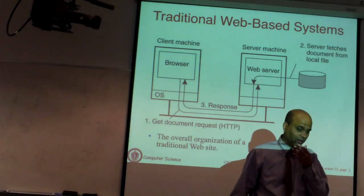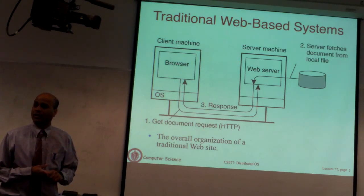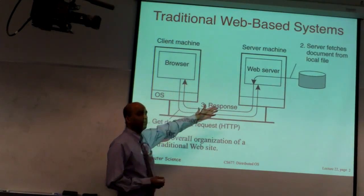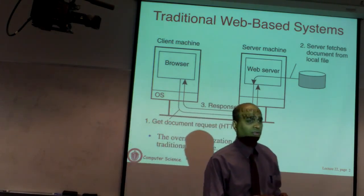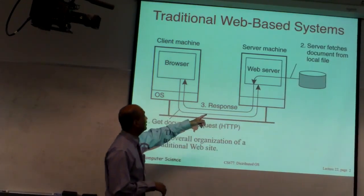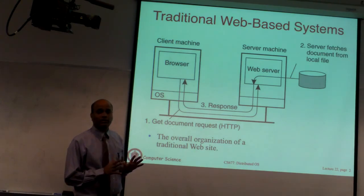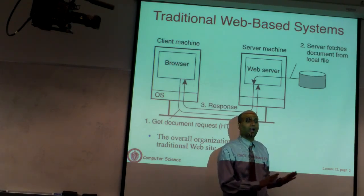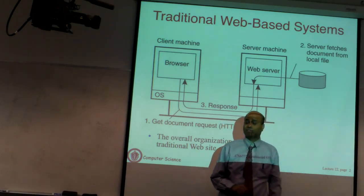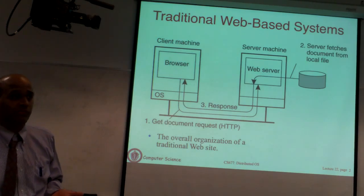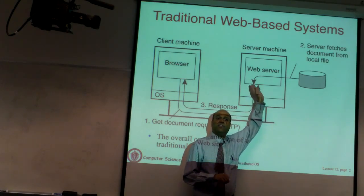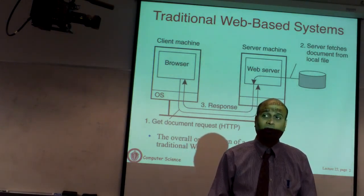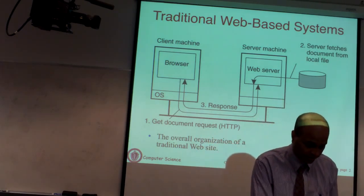Web systems are client-server systems. The client machine typically runs a browser, and the server machine runs a web server. They talk HTTP. The browser makes requests to the web server, which retrieves or generates the requested content and sends the response back. In the traditional static web content approach, HTML pages and images are already generated as files stored on the file system. Most of the web's content today is dynamic — pages are generated on the fly.